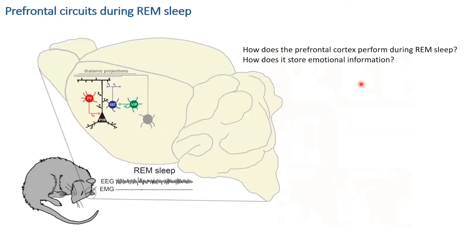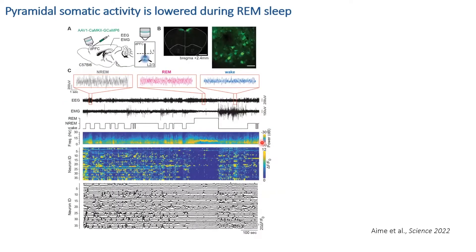This is the starting point of my postdoc: understanding how prefrontal regions function during REM sleep in mice, and how they store emotional information if their activity seems silent. To do that, I used two-photon calcium imaging in vivo in naturally sleeping, head-fixed mice, allowing us to record large populations of neurons expressing calcium indicators and capture their fluorescence longitudinally across different brain states.